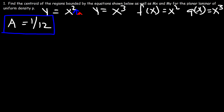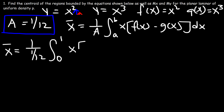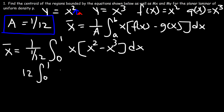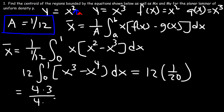Now let's determine the x-coordinate of the centroid. x-bar equals 1 over a times the integral from 0 to 1 of x times f(x) minus g(x) dx. That's 1 divided by 1/12 times the integral of x cubed minus x to the 4th, which we said was 1/20. So it's 12 times 1/20. Writing 12 as 4 times 3 and 20 as 4 times 5, we cancel the 4, giving the x-coordinate as 3 over 5.